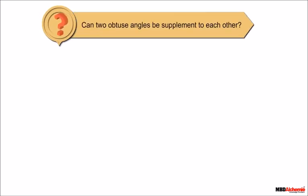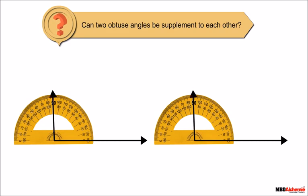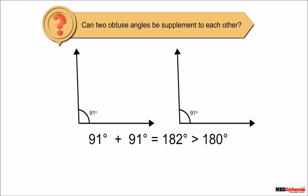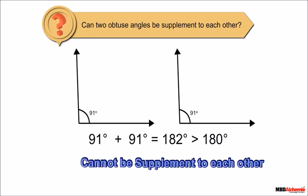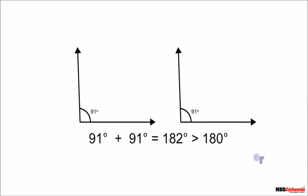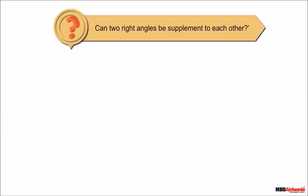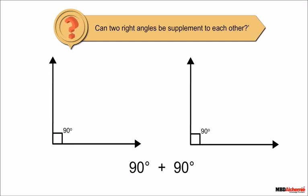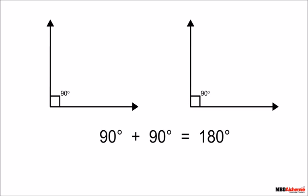Can two obtuse angles be supplementary to each other? If we draw two angles of 91 degrees each, their sum is greater than 180 degrees. Thus, two obtuse angles cannot be supplementary. However, two right angles can be supplementary, since 90° + 90° = 180 degrees. Therefore, two right angles are supplementary to each other.